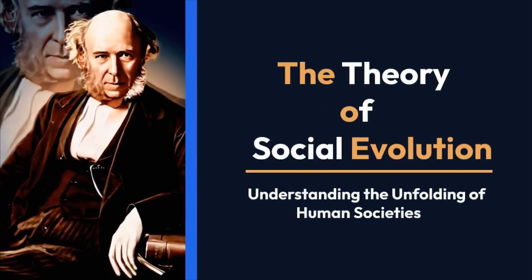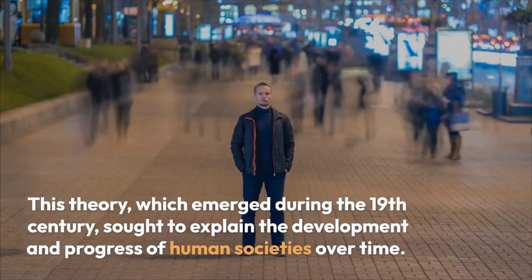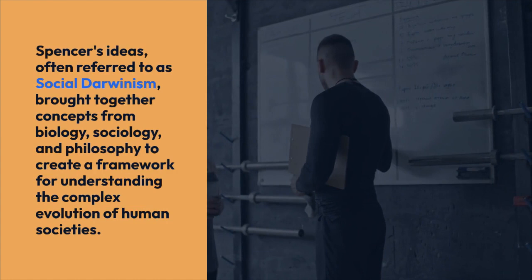The Theory of Social Evolution by Herbert Spencer: Understanding the Unfolding of Human Societies. Herbert Spencer, a prominent figure in the realm of sociology and philosophy, made a lasting impact with his pioneering work on the theory of social evolution. This theory, which emerged during the 19th century, sought to explain the development and progress of human societies over time. Spencer's ideas, often referred to as social Darwinism, brought together concepts from biology, sociology, and philosophy to create a framework for understanding the complex evolution of human societies.